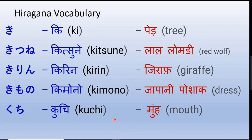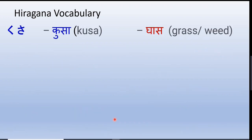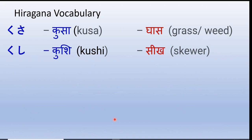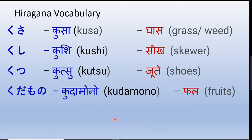Kuchi — the mouth. Kumo — used for spider and also for cloud. Kusa — grass or weed. Kushi — skewer. Kutsu — shoes. Kudamono — fruits in general; it can refer to any fruit.